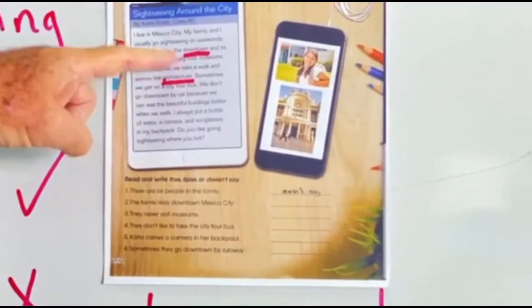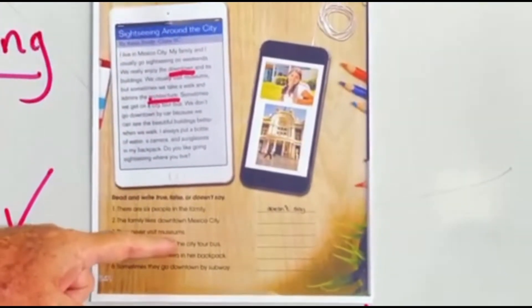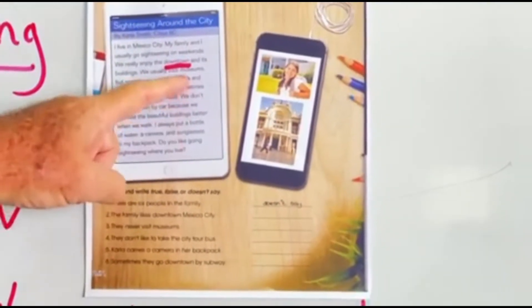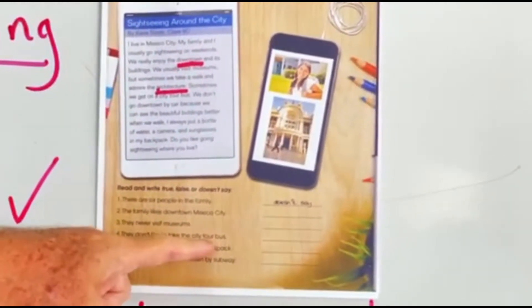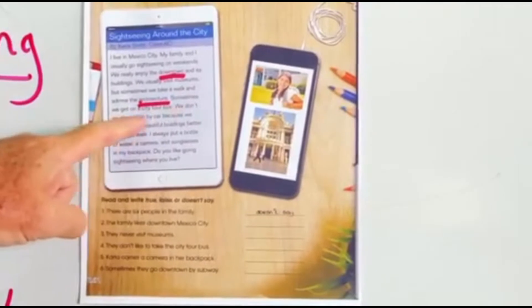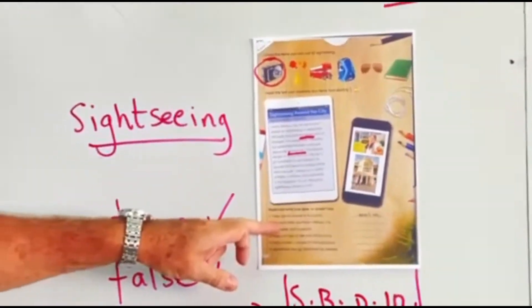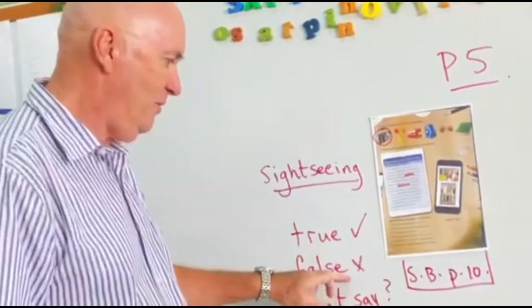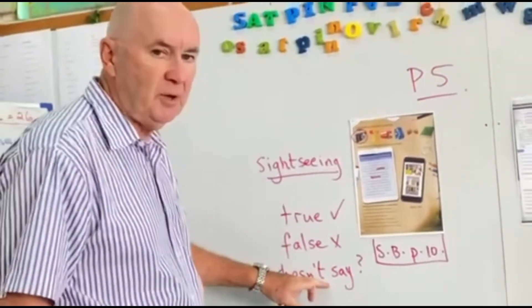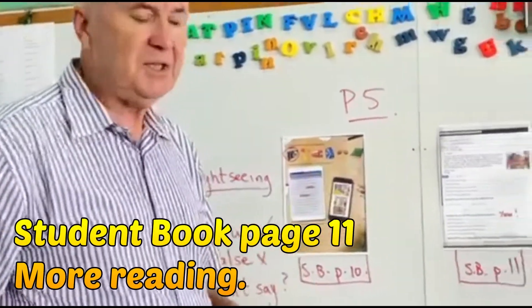We enjoy the downtown. They never visit museums. They don't like to take the city tour bus. Carla carries a camera in her backpack. Sometimes they go downtown by subway, subway the train under the ground. So those questions there, is it true, yes, or no false, or we don't know, she doesn't tell us.